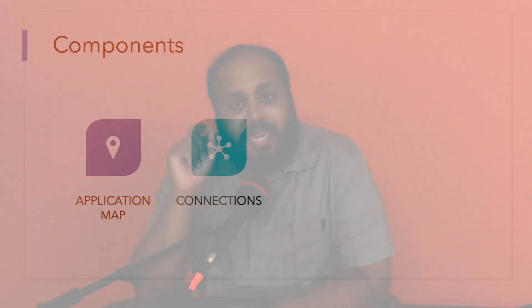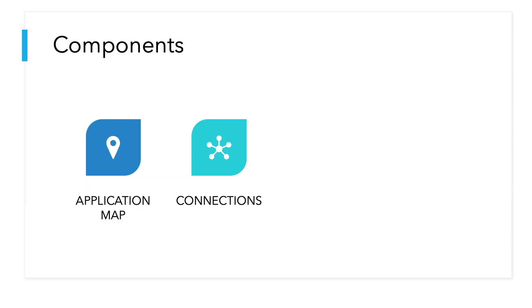The second component of a mobile storyboard is the connections. Connections, as the name suggests, is where we define how the various elements of the storyboard are connected to each other. This is especially important when creating non-linear applications and applications that integrate a lot of sub-functions like chatbots. This is one of the reasons why I'm not a big fan of using Microsoft Word or PowerPoint for storyboarding mobile applications.